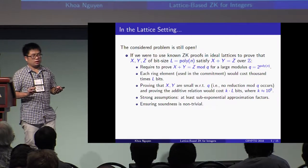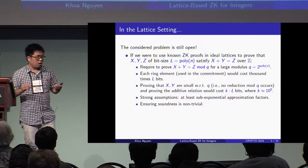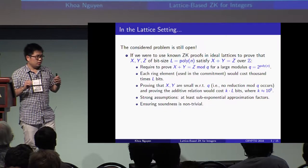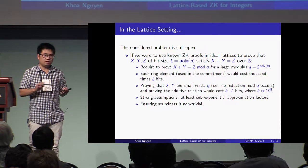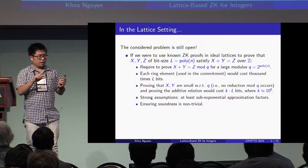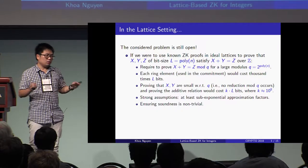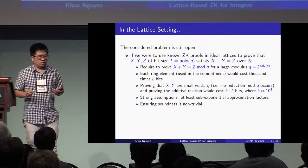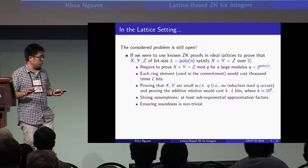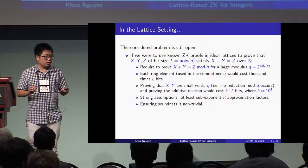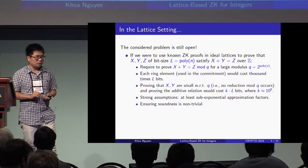For instance, if we were to use the existing zero-knowledge proof system in ideal lattices to prove that we have X, Y, and Z of polynomial bit size that certify the additive relations, the known technique requires proving this addition modulo some Q, where Q is exponentially large. Each element in Z_Q has to be represented by at least L bits, and each ring element used for the commitment scheme would contain thousands of L bits. So we would need a protocol with communication costs of hundreds of thousands of L bits — that would be very, very inefficient.